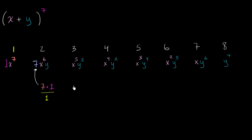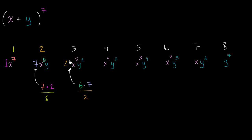For the third term, we use the exact same process: take the x-exponent of the previous term, which is six, times the coefficient of the previous term, which is seven, divided by the index of the previous term, which is two. Six times seven over two is 21.